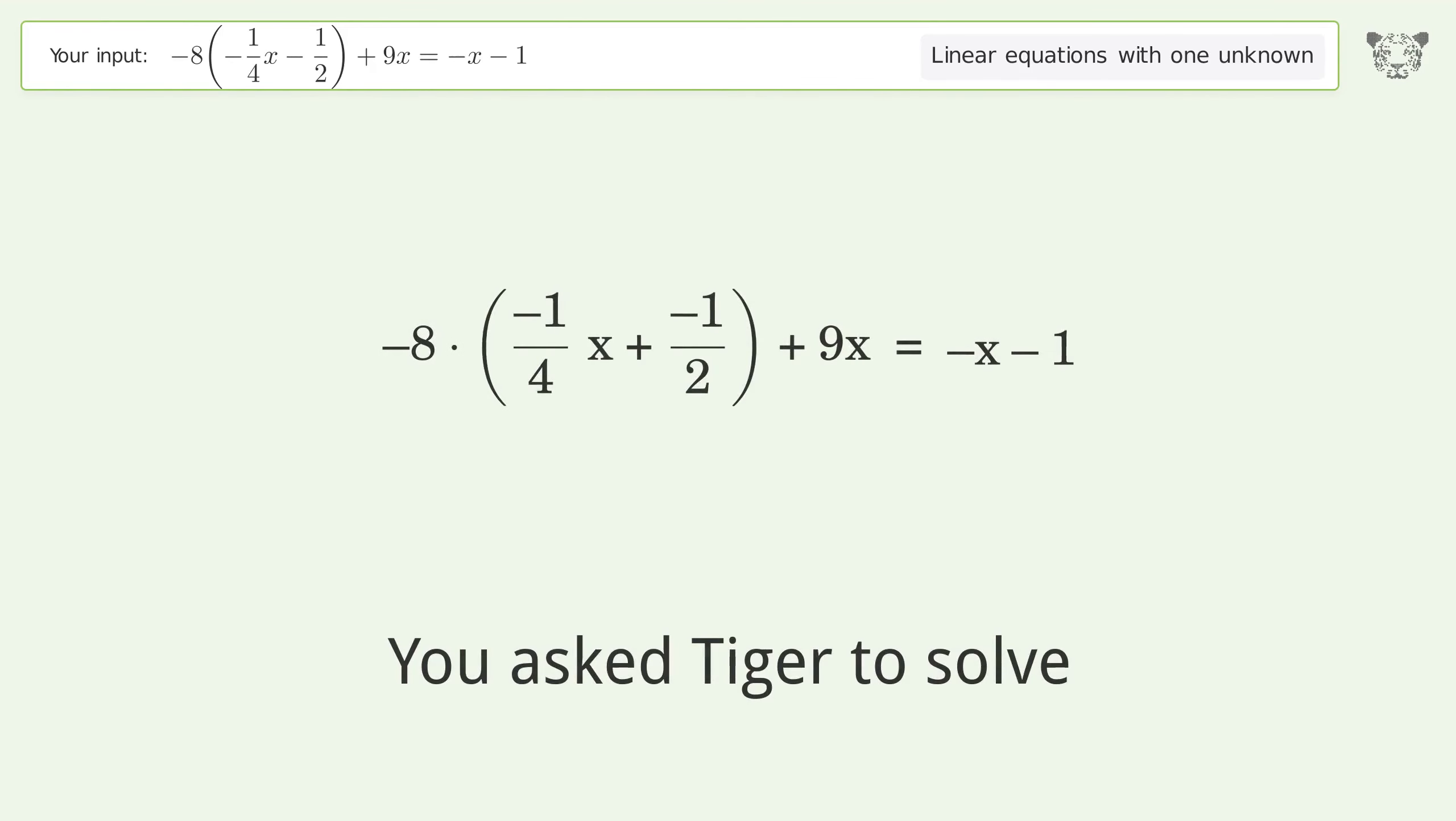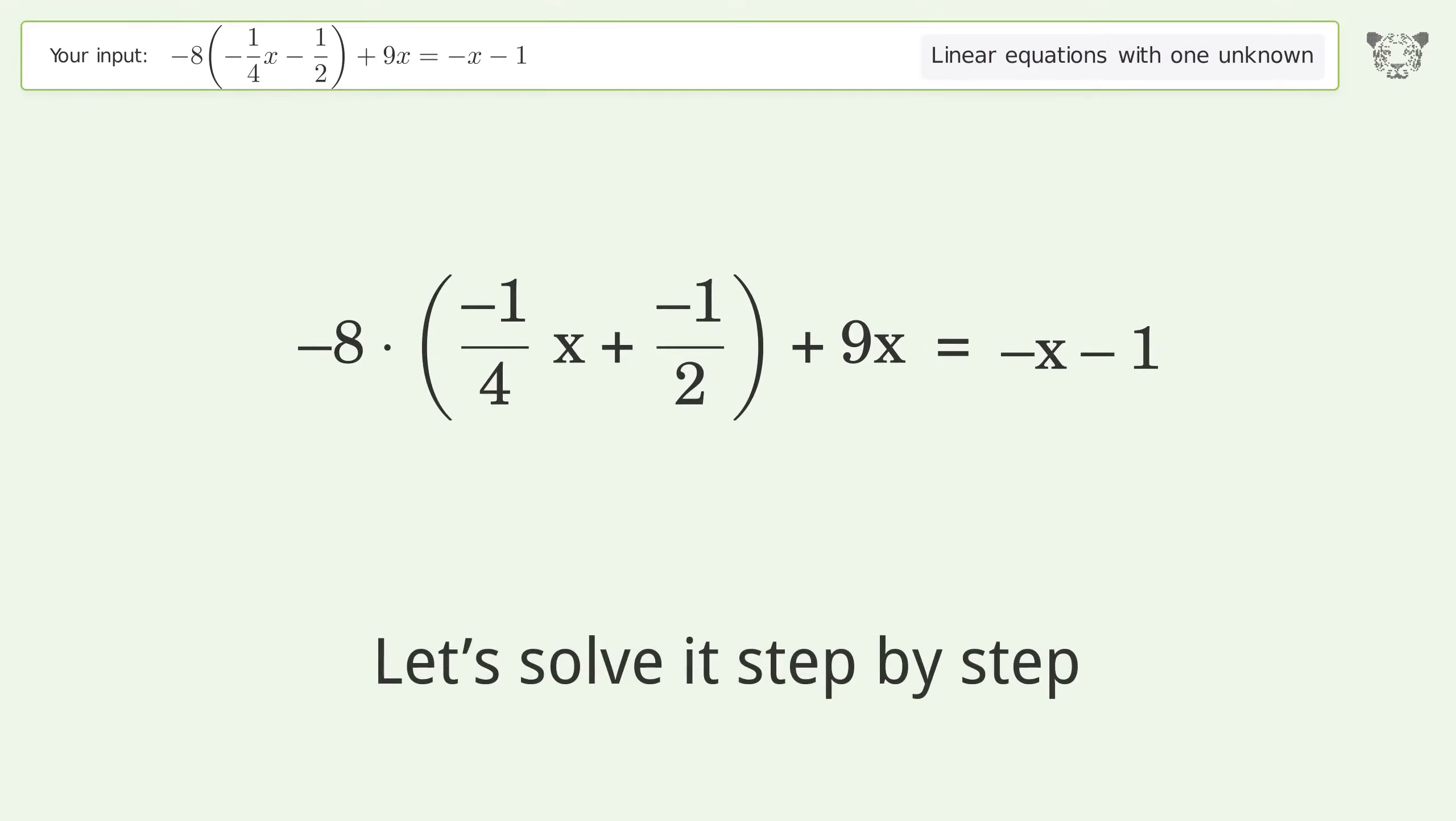You asked Tiger to solve this. It deals with linear equations with one unknown. The final result is x equals negative 5 over 12. Let's solve it step by step.